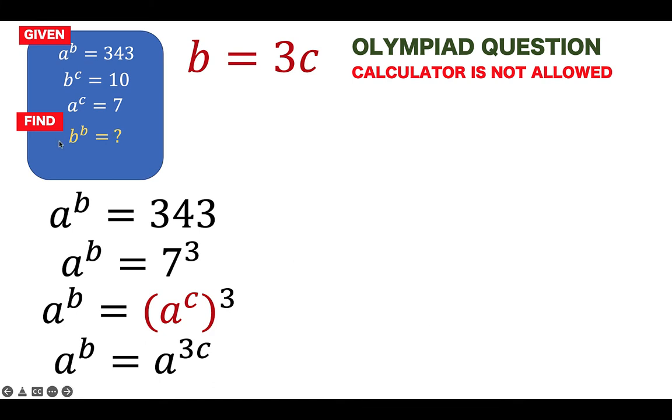Let us recall that what we are looking for here is the value of B raised to B. So we can begin with this identity. Any number is equal to itself, but we know that the value of B is equal to 3C. So we can replace this B by 3C to arrive at this equation.